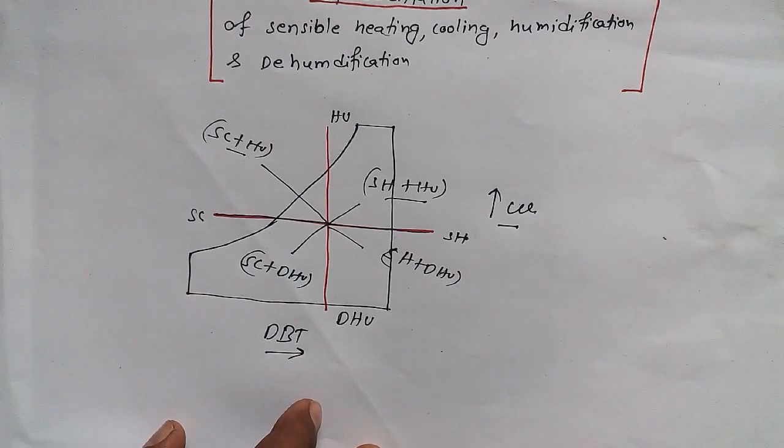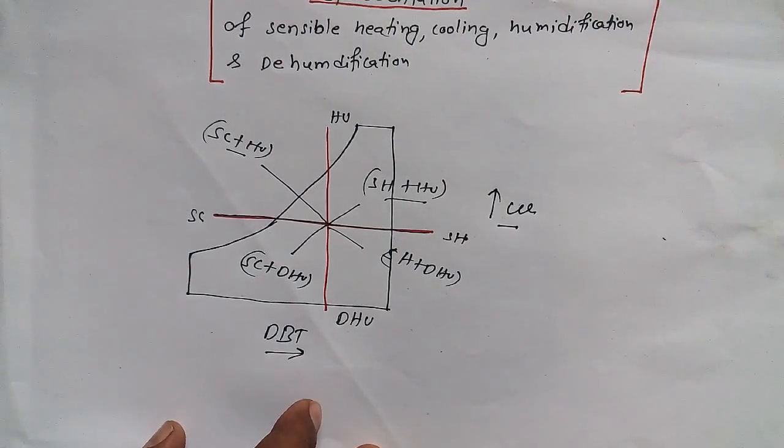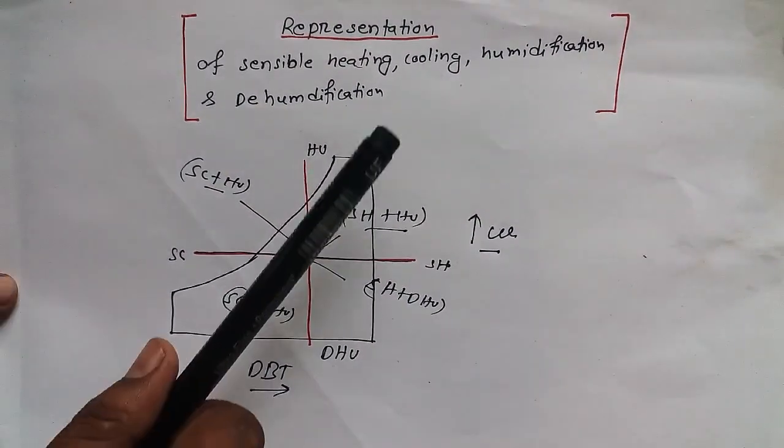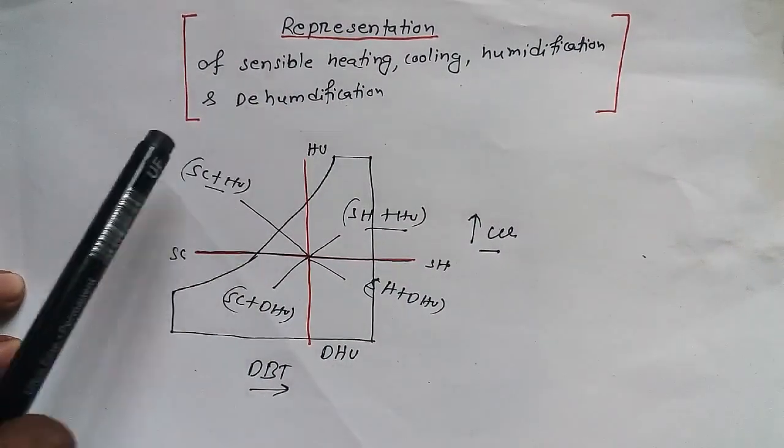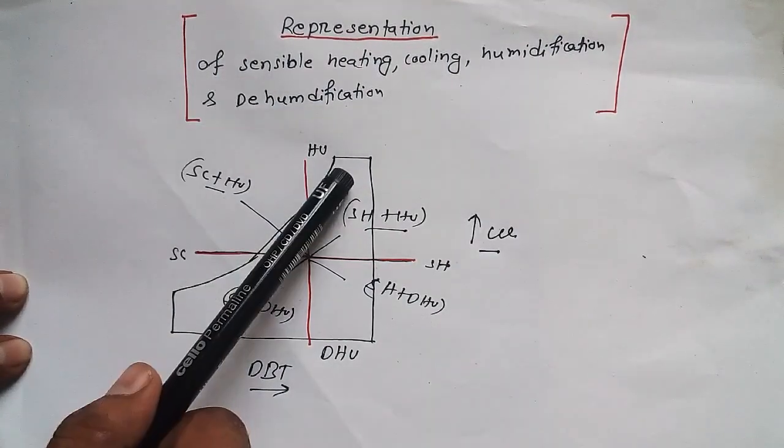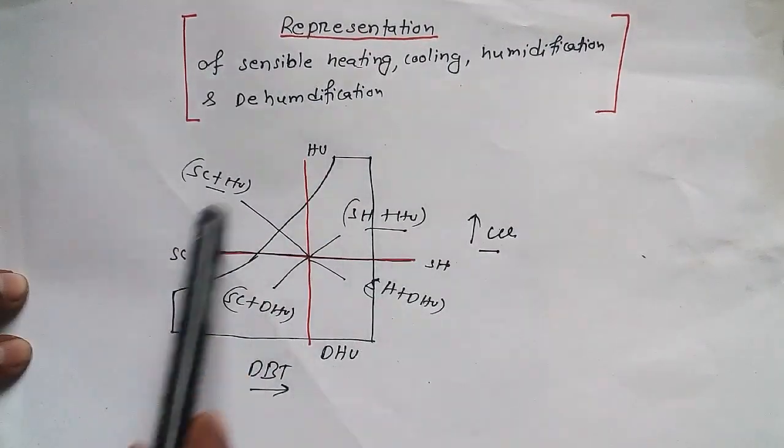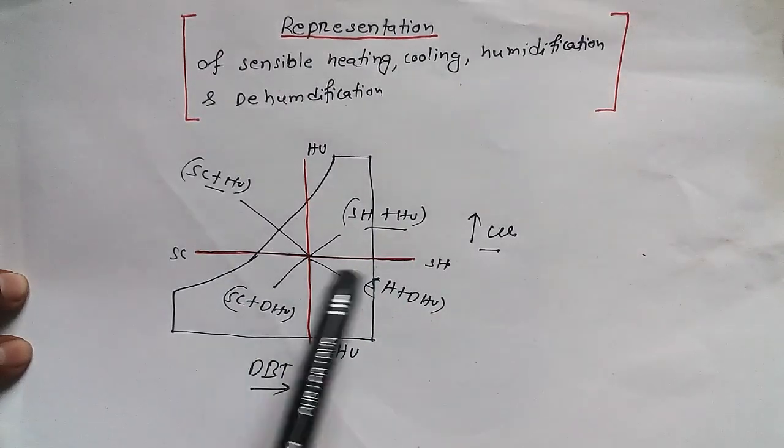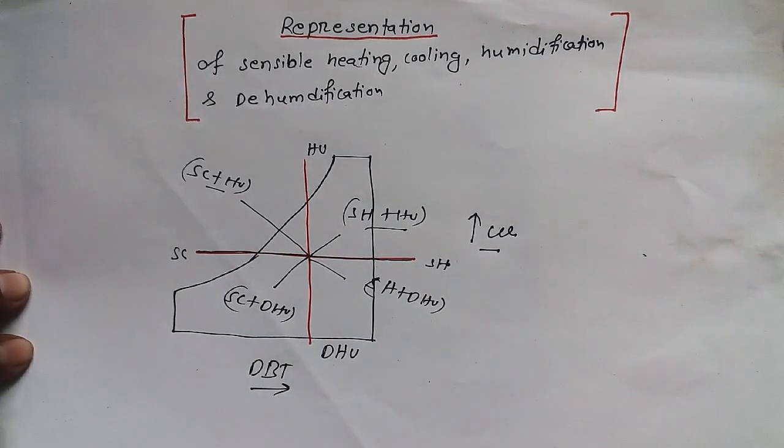I hope you understand the concept. I want to make you understand at least in this case of representation of sensible heating, cooling, humidification, and dehumidification on this chart. This chart is known as a psychometric chart.